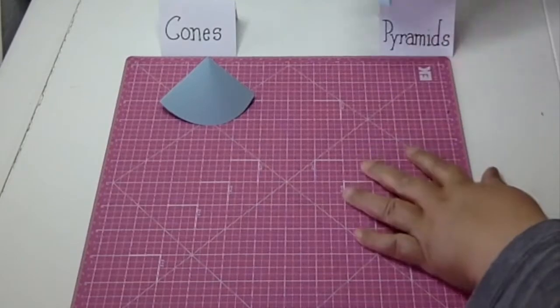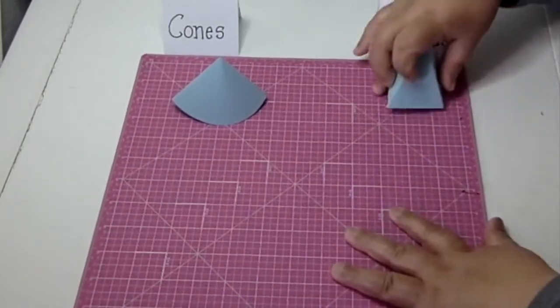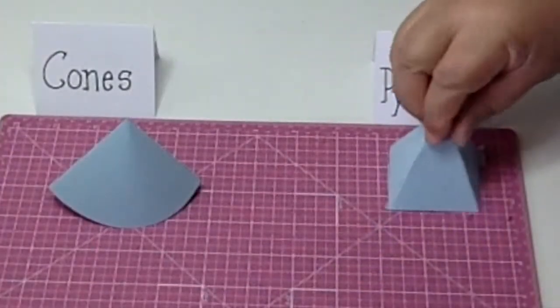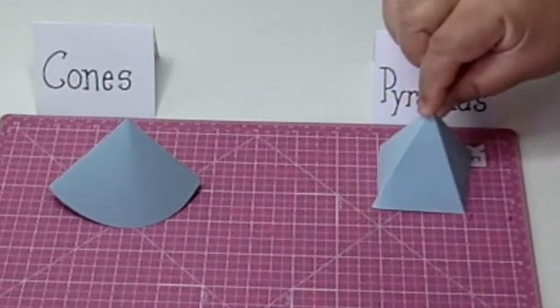So that's basically how you do it. These are the general steps in making cones and pyramids. I'm now going to cover making a narrow angle cone and pyramid.